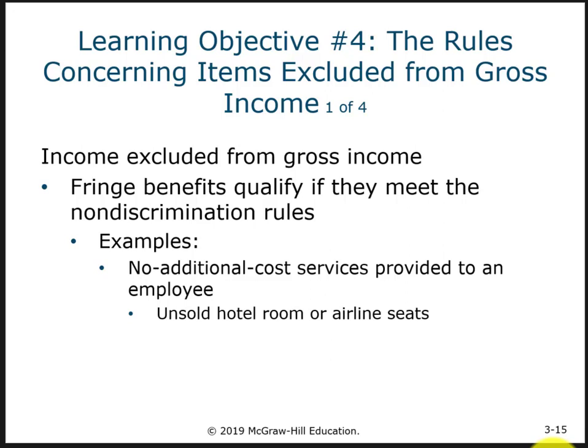Hello, everyone. Welcome back to part two of our discussion of chapter three. In the first part, we talked about things that are included and how they are included on the tax return. Now we're going to talk about things that are specifically excluded. Remember, all income unless specifically mentioned in the tax law is included, so there are some places where it's specifically excluded from income.